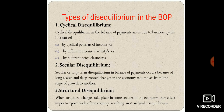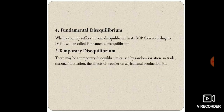Structural disequilibrium occurs when structural changes take place in some sectors of the economy, affecting the import-export trade of the country. If there are fundamental changes in the structure of the economy, that will also affect the balance of payment — for example, the LPG policy, which affected the balance of payment and resulted in a surplus balance of trade under the current account. Fundamental disequilibrium occurs when a country suffers chronic disequilibrium due to a lack of fundamental strategies.